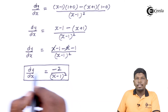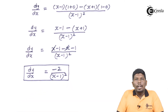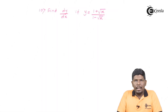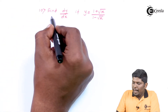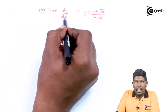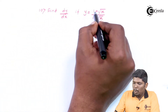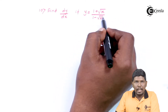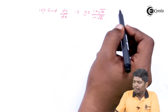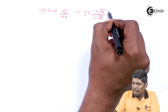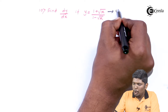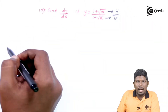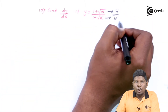Now let us start with problem number 10: find dy/dx if y is equal to (1 + √x) upon (1 - √x). The given sum is again in the form of u upon v, so let us apply the u/v rule.